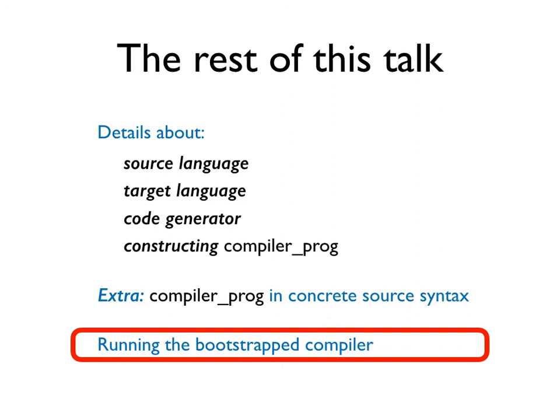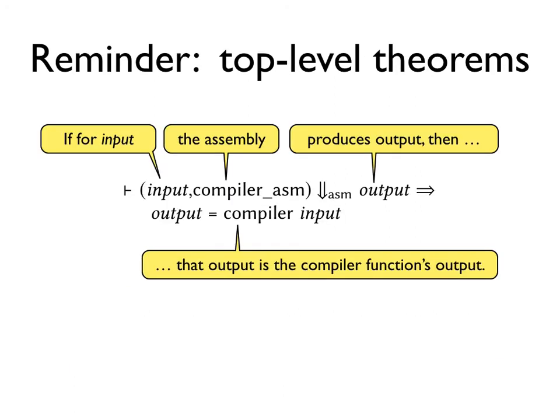Finally, let's run the bootstrap compiler outside of the logic. Before we run the verified assembly, here is a quick reminder about what we expect it to do. When we run the assembly, it should produce as output on STDOUT the output of the compiler, so the assembly that it produced for that input.